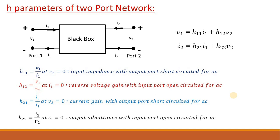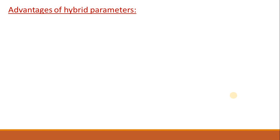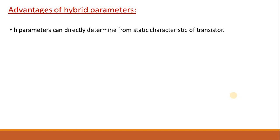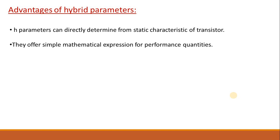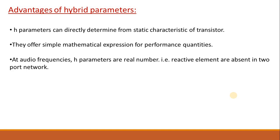What are the advantages of hybrid parameters? For a transistor, H-parameters can be directly determined from static characteristics. Once you represent a CE amplifier or any transistor in H-parameters, it offers very simple mathematical expressions for performance quantities like current gain, voltage gain, input impedance, and so on. While working with AC signals at audio frequency, H-parameters are real numbers, and all reactive elements are absent in the two-port network. Also, it is very convenient to use in circuit analysis, and various manufacturers provide H-parameters for their transistors.